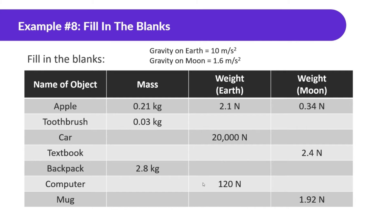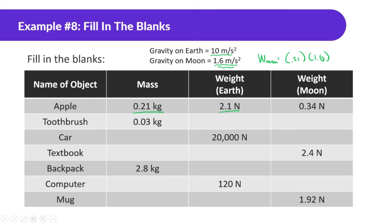Fill in the blanks again. We should know that gravity on Earth is essentially around 10 meters per second squared, and gravity on the moon is essentially 1.6 meters per second squared. An apple has a mass of 0.21 kilograms, which means the weight on Earth will be 2.1 newtons — just times 10. But for the moon, we can't just multiply by 10; we have to multiply by 1.6. Weight on the moon equals mass times gravity on the moon: 0.21 times 1.6 equals 0.336 newtons, or simplified, 0.34 newtons.